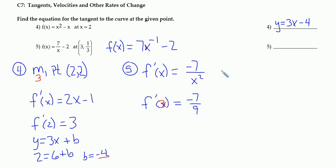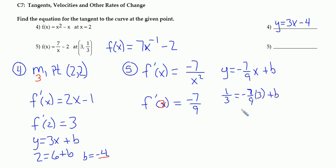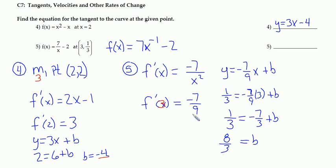So I need to find the b value. I've got y equals negative 7/9 x plus b. y is 1/3 when x is 3. Plugging in: 1/3 equals negative 7/9 times 3 plus b. Reducing 3 and 9 gives: 1/3 equals negative 7/3 plus b. So b equals 8/3 when I add 7/3 to both sides. I have a slope of negative 7/9 and a y-intercept of 8/3, so my equation is y equals negative 7/9 x plus 8/3.